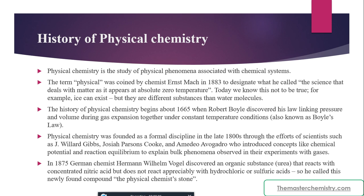Physical chemistry was founded as a formal discipline in the late 1800s through the efforts of scientists such as J. Willard Gibbs and Amedeo Avogadro, who introduced concepts like chemical potential and reaction equilibrium to explain bulk phenomena observed in their experiments. They also contributed greatly to other areas of chemistry by drawing attention to problems caused by decomposition reactions that had not been noticed before.